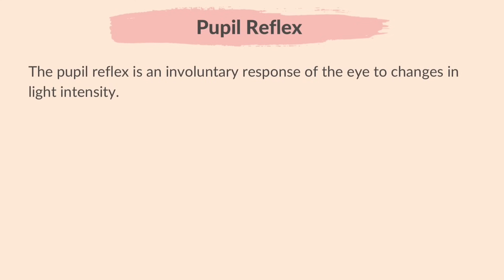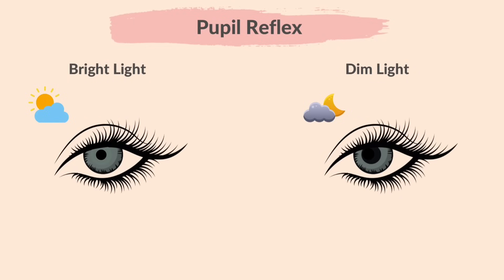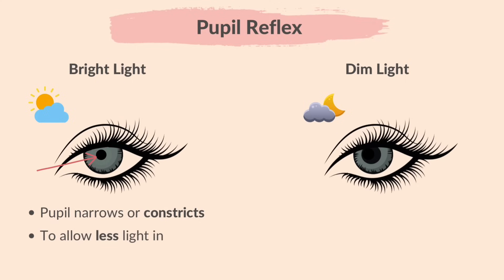Next, let's learn about the pupil reflex. The pupil reflex is an involuntary response of the eye to changes in light intensity — an automatic reaction that helps control the amount of light entering the eye. In bright light or higher light intensity, the pupil diameter gets smaller or narrows to allow less light to enter, protecting the retina from damage. When the pupil gets smaller, we say that it constricts.